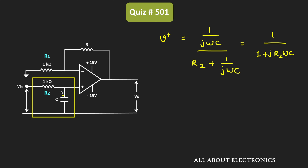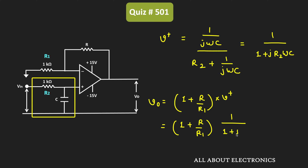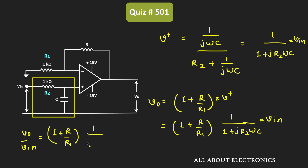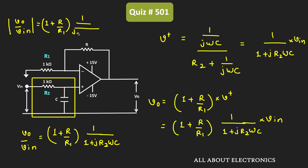This voltage will get amplified by the non-inverting gain of the op-amp. So Vout equals (1 + R/R1) times V+, or equivalently (1 + R/R1) times 1 divided by (1 + j·R2·ω·C). If we consider the magnitude of Vout/Vin, we get (1 + R/R1) times 1 divided by the square root of (1 + R2²·ω²·C²). This is the magnitude of the gain transfer function.